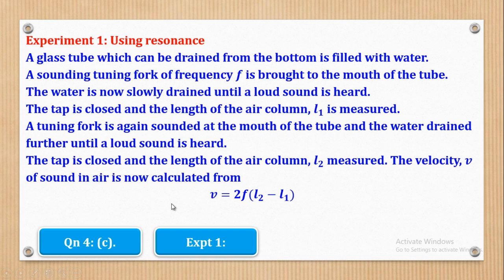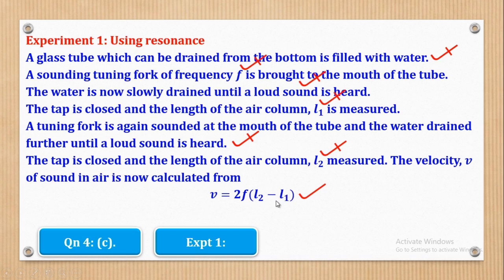Let's see how marks can be awarded. The first mark is for filling the glass tube with water that can be drained at the bottom. The next mark is for using a tuning fork of known frequency. Next is slowly draining the water until a loud sound is heard. Measuring that length L1 is another half mark. Draining again until another loud sound is heard and measuring L2 is another mark. Lastly, quoting the correct formula for velocity of sound in air is the final mark.